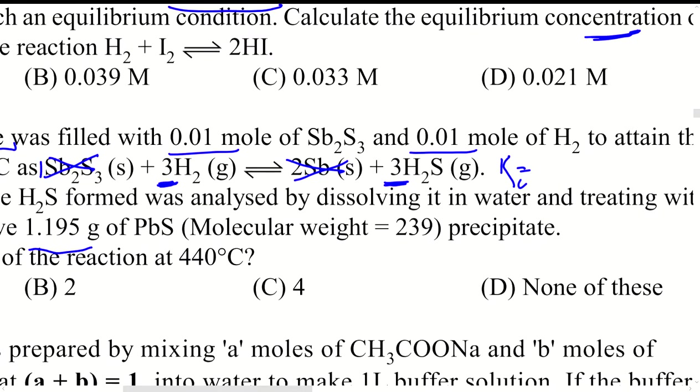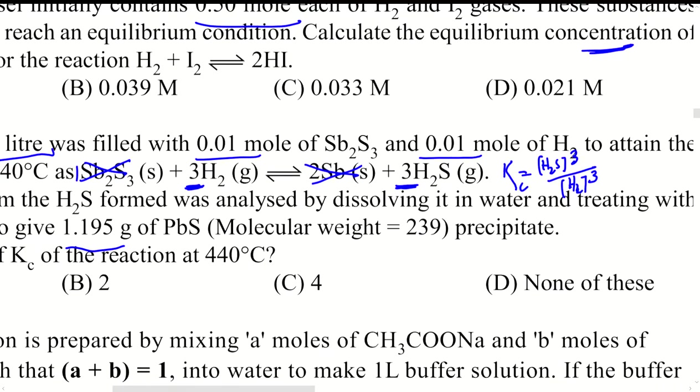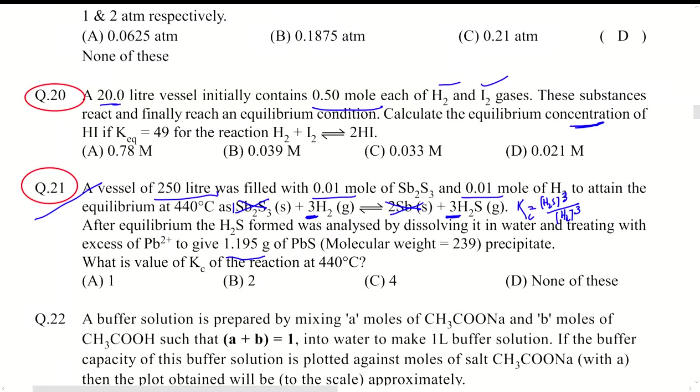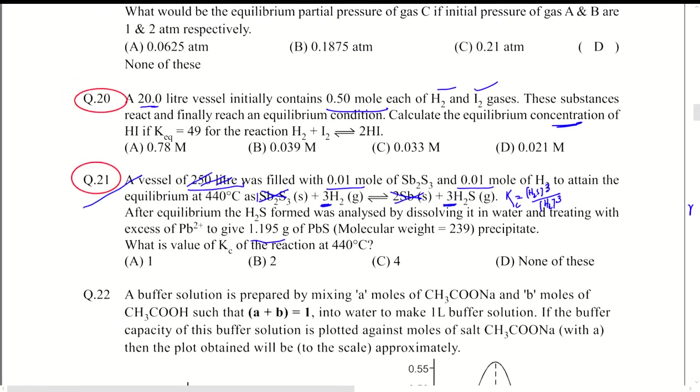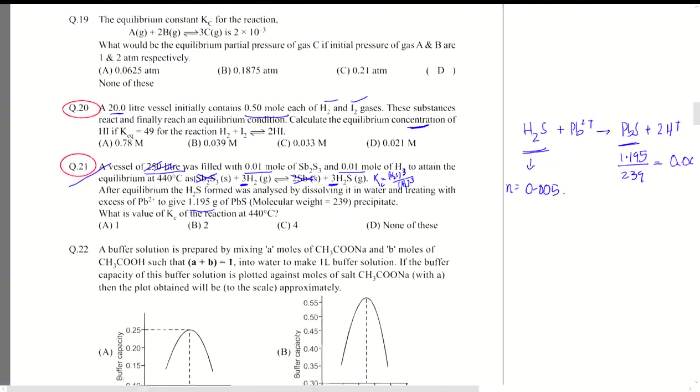The value of Kc can be written as concentration of H2S cubed divided by concentration of H2 cubed. Because delta N is 0, the 250 liters has no role to play.